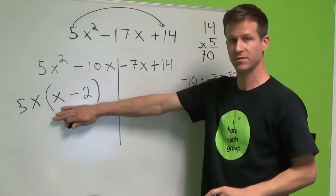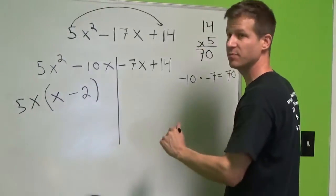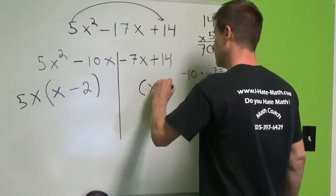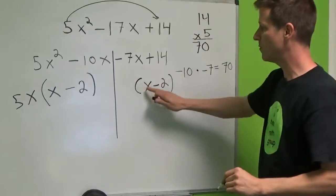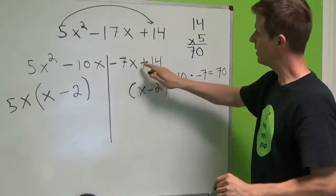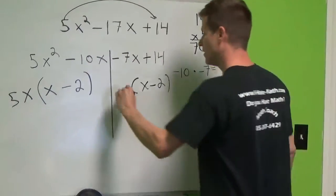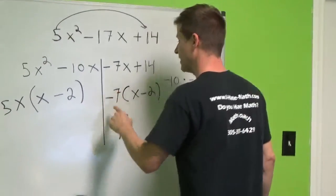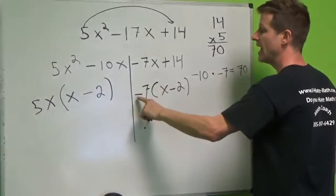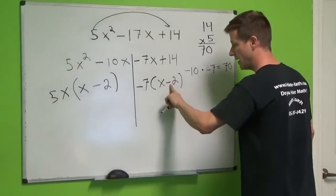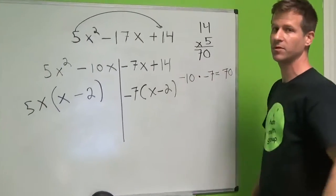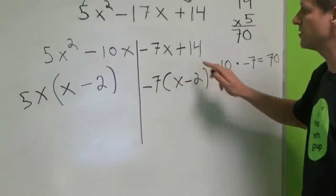Let's bring this over here. That's part of the process. Now we need something on the outside when we multiply. It gives us this and this. What am I missing? Negative 7. Negative 7 times x is negative 7x. Negative 7 times a negative 2 is actually a positive 14. So negative negative is a positive 14.